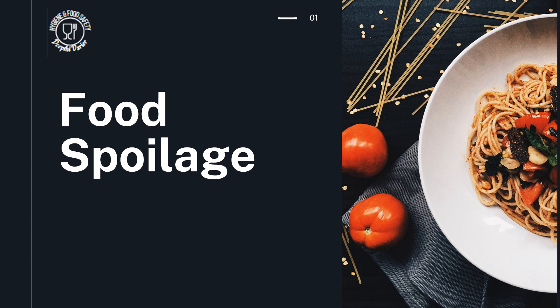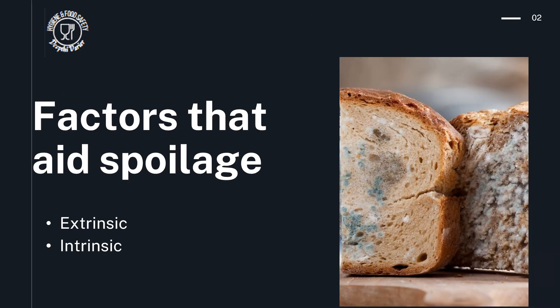Hello all. In the previous video we have seen the different signs of food spoilage. Now here let's have a quick look at the reasons for food spoilage. Whatever be the cause for food spoilage, there are several factors which actually help the food to deteriorate faster or spoil faster. These factors can be grouped as extrinsic and intrinsic.